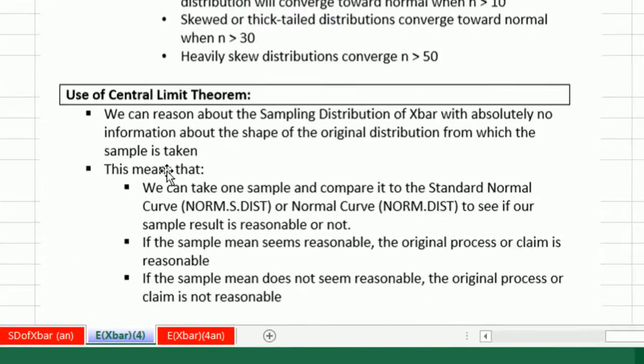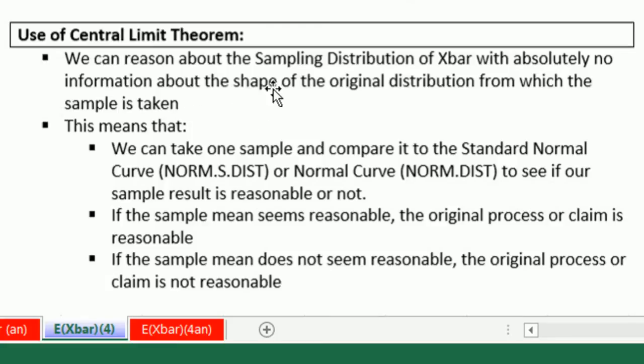So use of the central limit theorem, we can reason about the sampling distribution of x-bar with absolutely no information about the shape of the original distribution. This means we could take one sample and compare it to the standard normal curve using norm.s.dist or the normal curve norm.dist. Most of the time we're using normal curve, but each time we're checking to see if our sample result is reasonable or not. If the sample mean seems reasonable, then the original process or claim seems reasonable. If the sample mean does not seem reasonable, then the original process or claim is not reasonable.